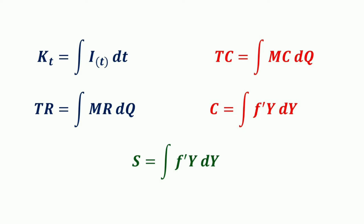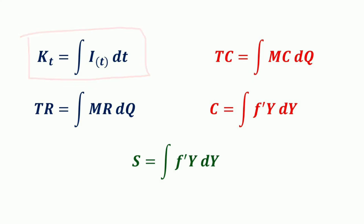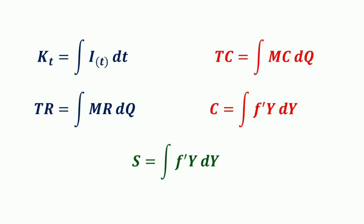Now we are going to consider some of the important economic applications of indefinite integrals. The first one is K(t), that means capital formation over the period of time. If you integrate net investment with respect to time — that is the integral of I(t) with respect to t — then capital stock formation can be found. The net investment is the rate of change in capital stock formation, which is derived by taking the derivative of capital stock formation with respect to t.